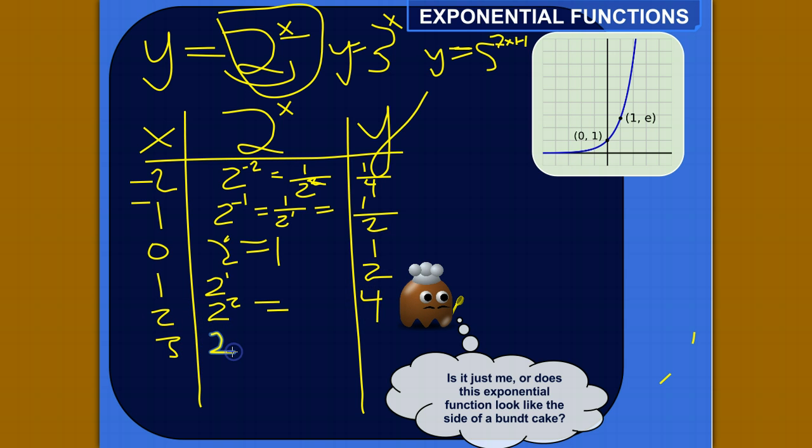And then for plugging in 3 for x, we've got 2 to the third power, which is 2 times 2 times 2. 2 times 2 is 4, and then times 2 is 8. And actually, just because we're like that, let's plug in 4. 2 to the fourth would be 2 to the third times 2, so that would be 16.